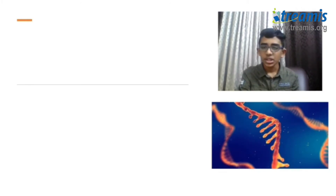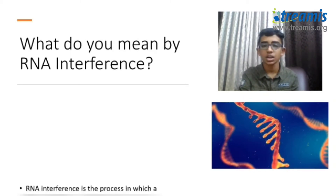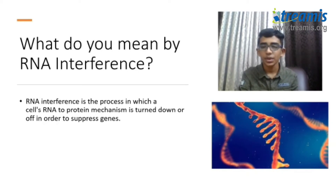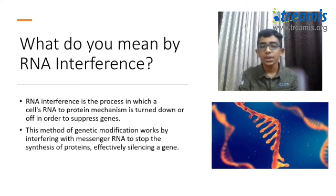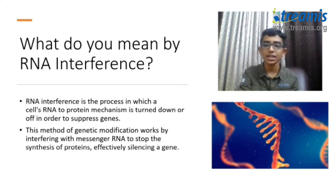The picture on the screen shows RNA, or Ribonucleic acid. RNA interference is the process in which a cell's RNA-to-protein mechanism is turned down or completely off in order to suppress or silence genes. This method of genetic modification works by interfering with messenger RNA to stop the production of proteins, effectively silencing the gene.